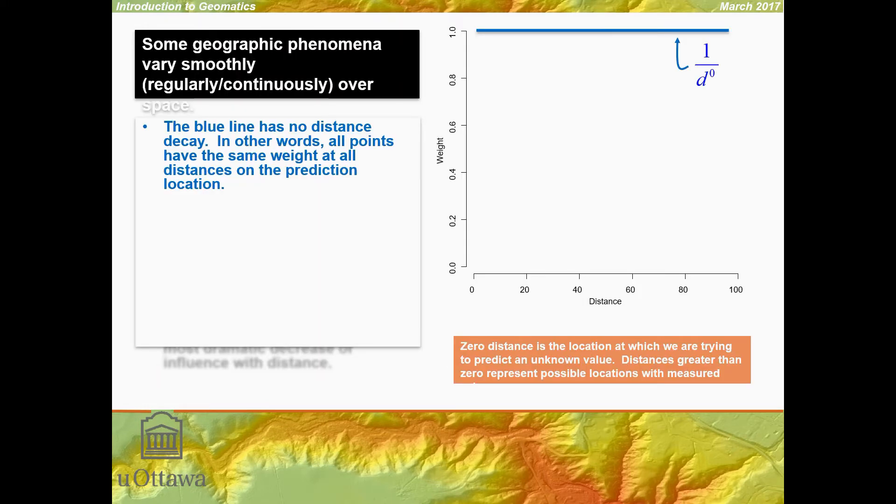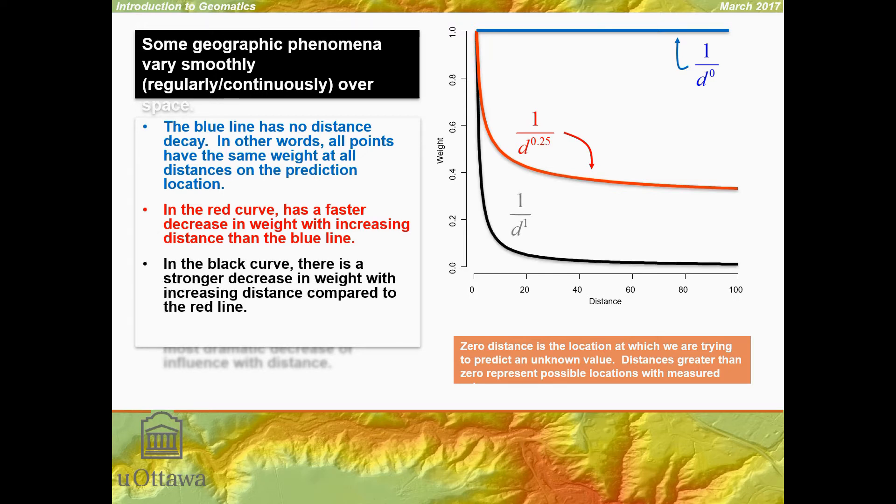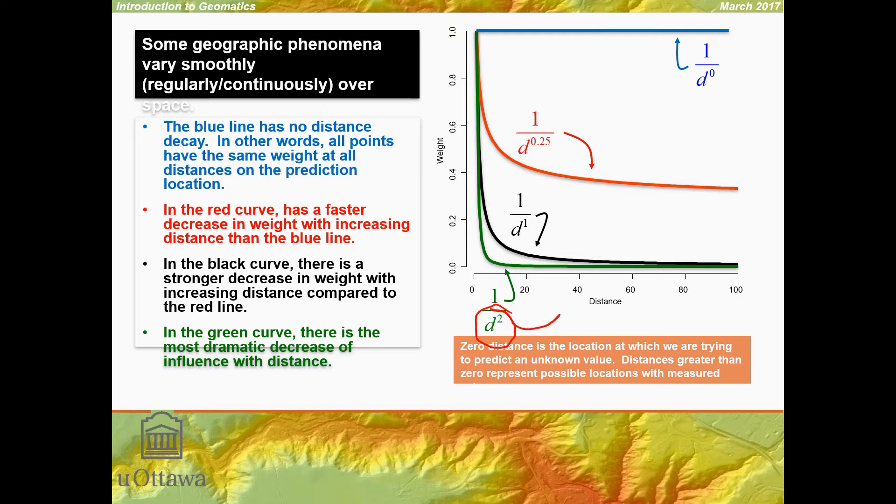This line represents 1 over distance to the power of 0. This red curve is 1 over distance to the 0.25. As we increase the magnitude of the exponent of D, such as 1, we have something that decreases at a decreasing rate, which is faster than the previous one. Going to 1 over distance squared, this being the most commonly used weighting scheme for inverse distance weights.